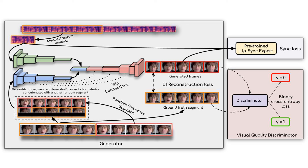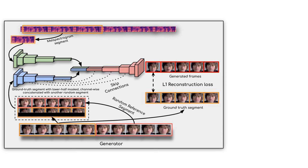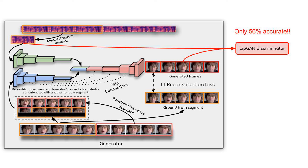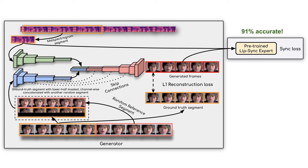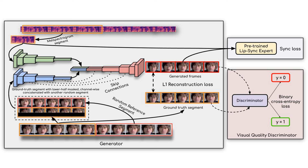Our core architecture can be summed up as generating accurate lip sync by learning from a well-trained lip sync expert. Previous works use only a reconstruction loss or an inaccurate discriminator trained in a GAN setup. We show that both these approaches do not strongly penalize incorrect lip shapes. Instead, we use an accurate pre-trained lip sync expert to enforce the generator to produce accurate lip shapes. Finally, we also add a visual quality discriminator to improve the quality of the generated results.